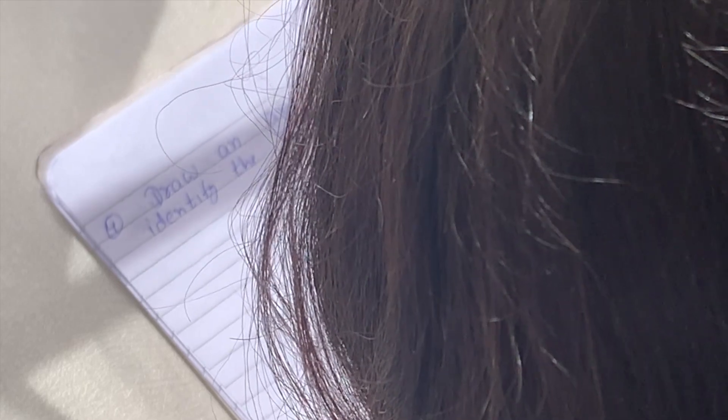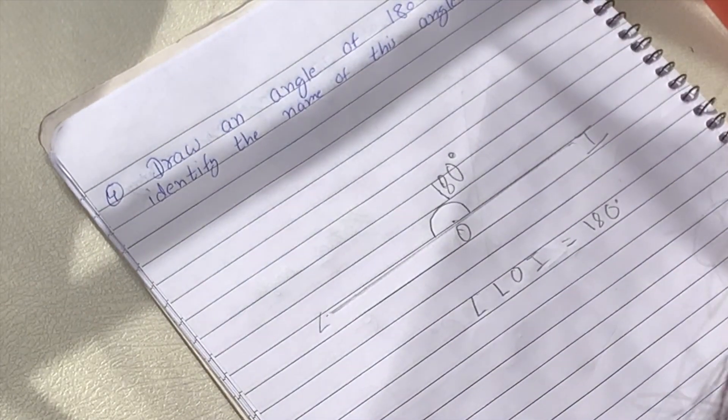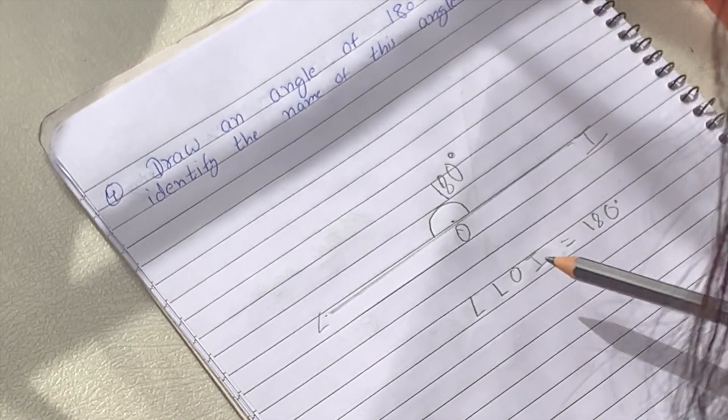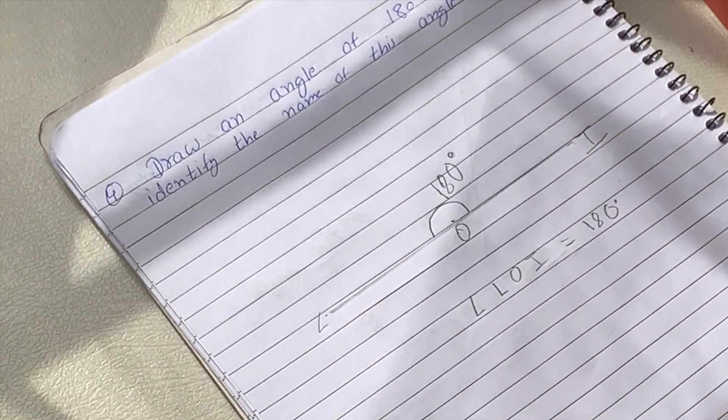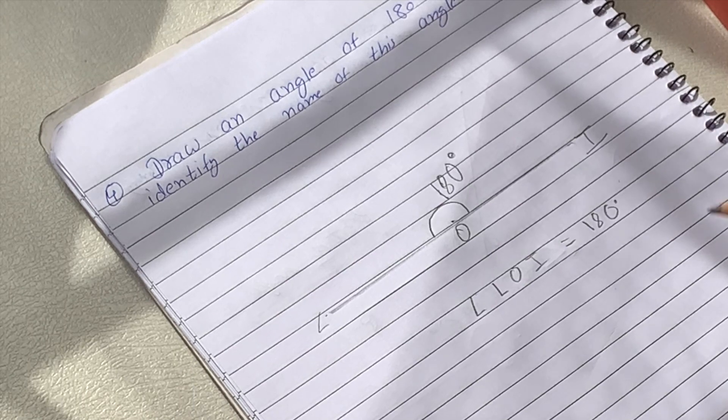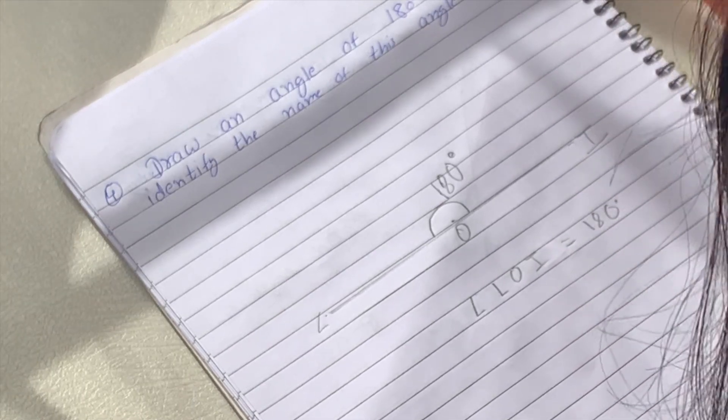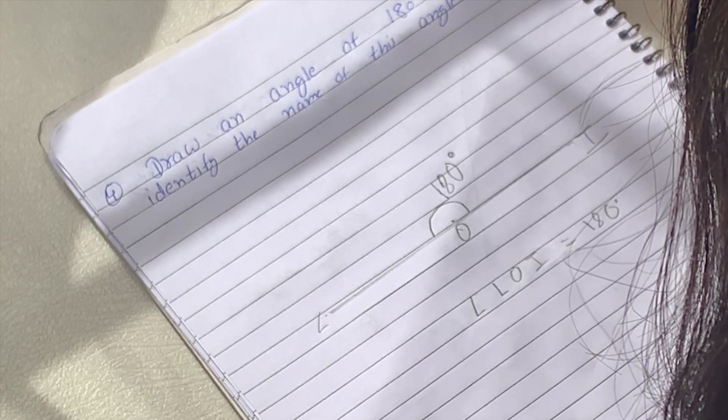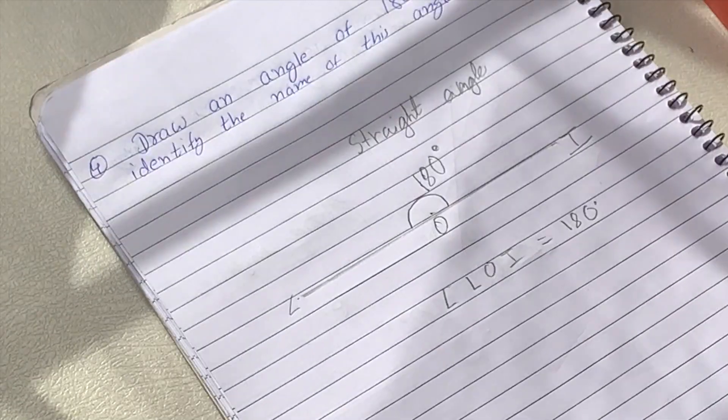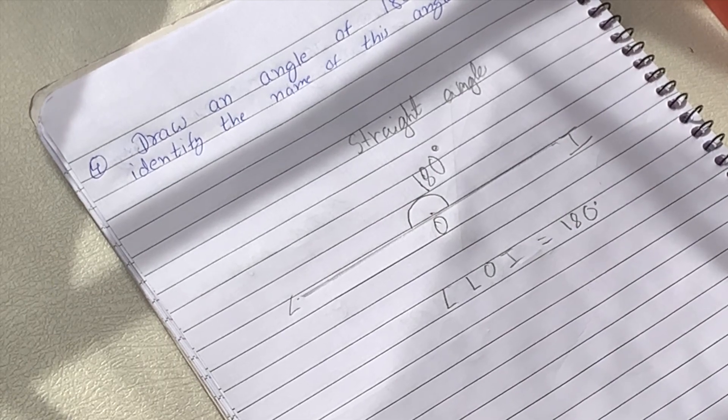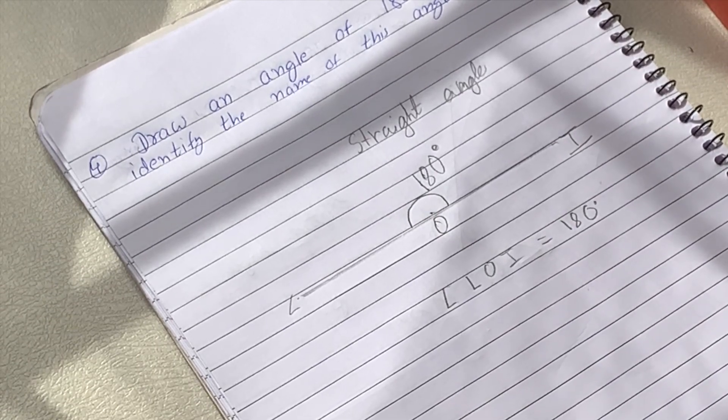L O I equals 180 degrees. Now can you identify what angle L O I is? L O I is a straight angle because it is exactly 180 degrees.